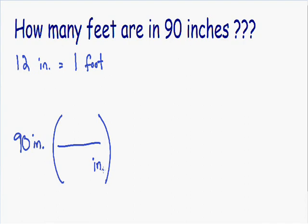And in the numerator of our conversion tool, we always put the units that we are finishing with, that we are ending with. So since we need to convert inches into feet, that means we are going to put feet in our numerator. Last but not least, our numerator and our denominator of our conversion tool have to be exactly equal. We know that 12 inches is exactly equal to one foot, so we make the denominator 12 inches and the numerator one foot.